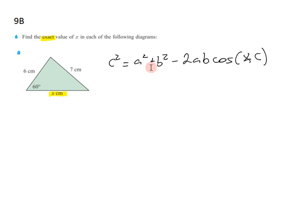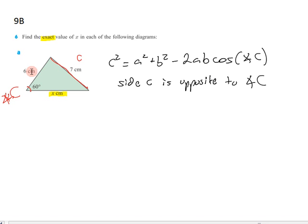Now the thing that we have to remember for the cosine rule is that side c is opposite to angle c. So if we intend to use this angle here, that means that this must be side c, and that must be angle c.